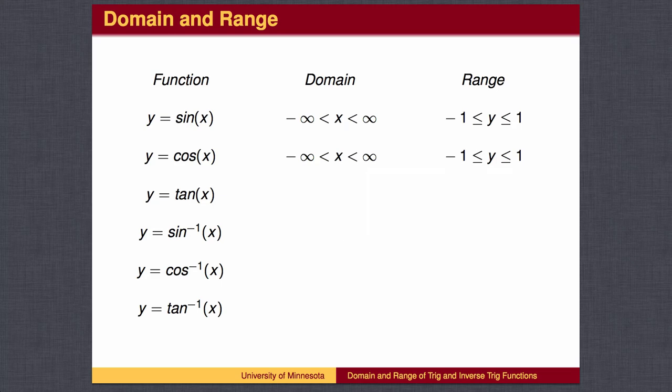The tangent function likewise is defined for all angles, except that the denominator cannot be 0. The denominator of the tangent function is 0 when the point on the unit circle is at the top or the bottom, that is, at pi over 2 or 3 pi over 2, or the corresponding angles found by going full circles from those two angles. Tangent values can be arbitrarily large. If the angle is slightly less than 90 degrees, the sine value is 0.99 something and the cosine value is 0.00 something, yielding a very large tangent value. The range of the tangent function is all real numbers.